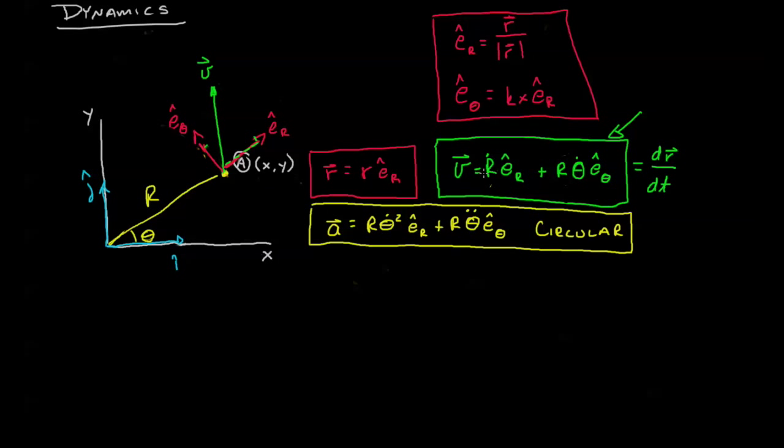We identified the velocity by looking at the derivative of the position, right here. Likewise, we can identify the acceleration by looking at the derivative of the velocity. In our most recent module we looked at it keeping the radius constant. Today we're going to allow the radius to change and we're going to take the derivative of the velocity with respect to time.